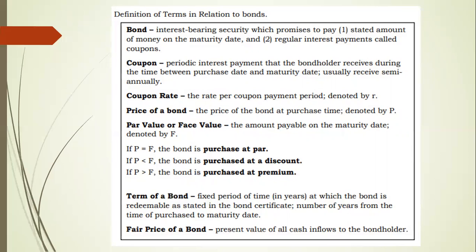The price of a bond, denoted by P, is the price of the bond at the purchase time. Par value or face value, denoted by F, is the amount payable on the maturity date. If P equals F, the bond is purchased at par. If P is less than F, the bond is purchased at a discount. If P is greater than F, the bond is purchased at premium. Term of a bond is the fixed period of time, expressed in years, at which the bond is redeemable. The fair price of a bond is the present value of all cash inflows to the bondholder.